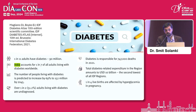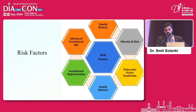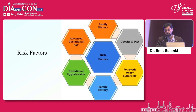India accounts for about one in seven of all adults living with diabetes worldwide. The key risk factors include family history, advanced gestational age, gestational hypertension, obesity and diet, and PCOS — polycystic ovarian syndrome.